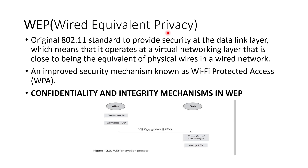Wired Equivalent Privacy provides the same privacy as a wired network, but remember: the security mechanisms required for a wired network, when applied to a wireless network, don't work the same way. For wireless networks, a different mechanism is used — the Wi-Fi Protected Access (WPA) protocol. WEP is used for confidentiality and integrity.